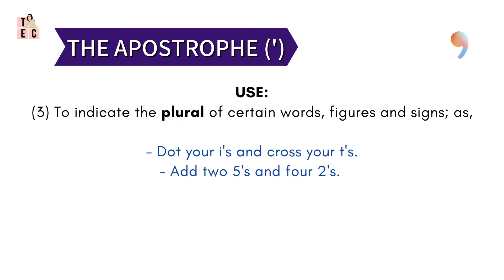And lastly, the apostrophe is used to form the plural of letters and figures. For example: 'Dot your i's and cross your t's' — meaning, add a dot on the letter i and mark the cross line on the letter t.